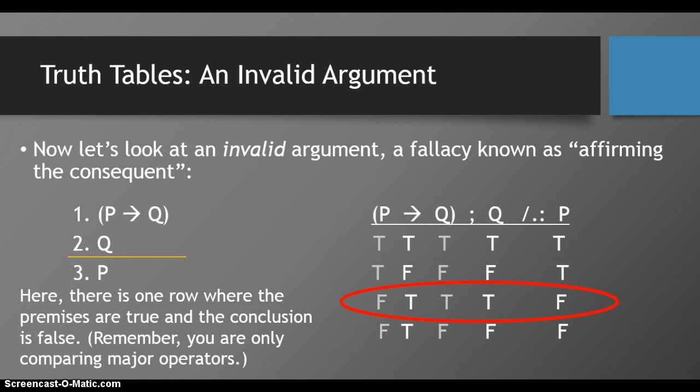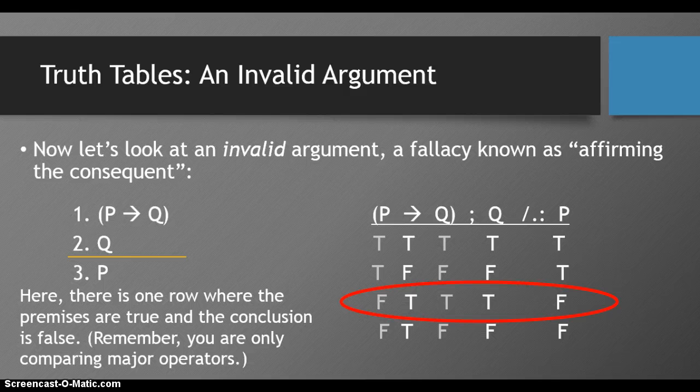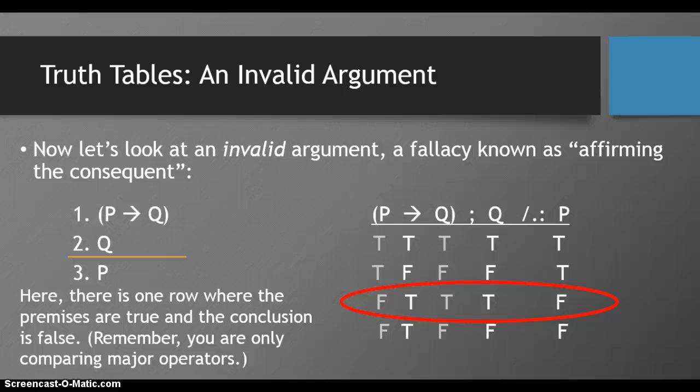But here we see in row three, all the premises are true, if P, then Q is true, and Q is true, but P is false. This is a possible way these truth values could turn out. If that's true, then it is possible for all the premises to be true and the conclusion false in this argument, therefore this argument is not valid.